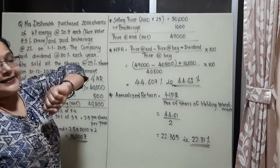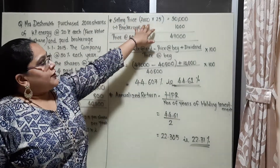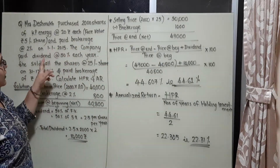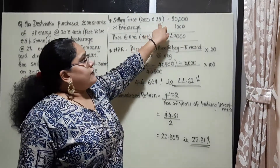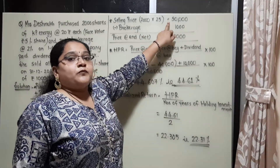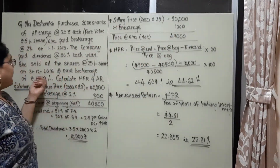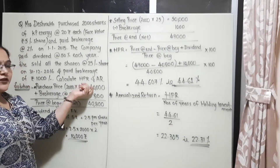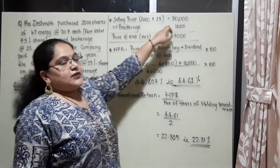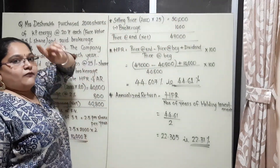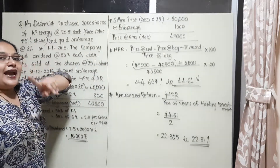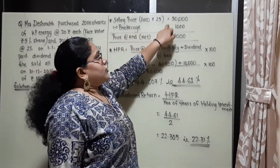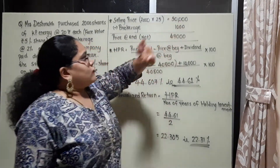Now for the selling price calculation: 2000 into 25 — she sold all her holding, not partly. The whole 2000 shares into 25, so that is 50,000. The brokerage she paid on selling is 1000 rupees. We know that while buying we add the brokerage, and while selling we deduct the brokerage. So 50,000 minus 1000 equals 49,000.